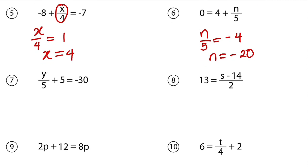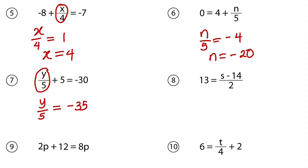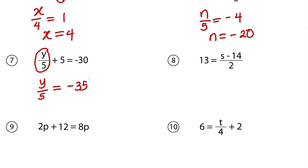Question number 7. We have a certain number — you should group them together — plus 5 is equal to negative 30. So what number can you add to 5 to get negative 30? The number must be negative 35. Hence, y divided by 5 is equal to negative 35, because negative 35 plus 5 is negative 30. So you need to ask yourself what number you can divide by 5 to get negative 35. If you cannot think of that number real quick, you can simply cross multiply. If you take 5 and multiply by this, you are going to get negative 175. Which implies that y is equal to negative 175. And if you plug it back, negative 175 divided by 5 will give us negative 35. As simple as that.